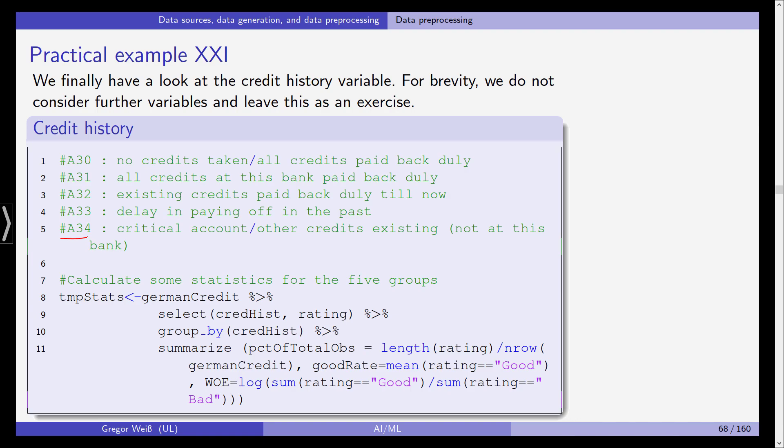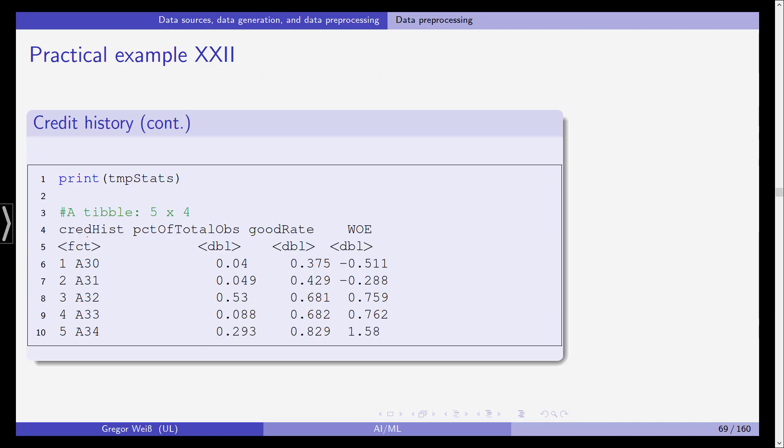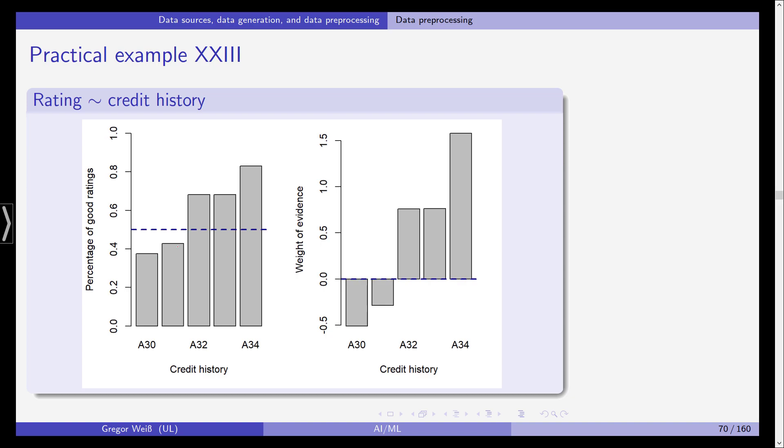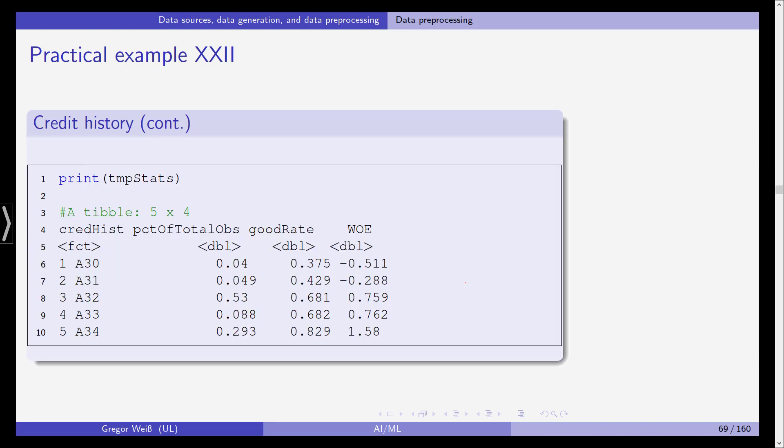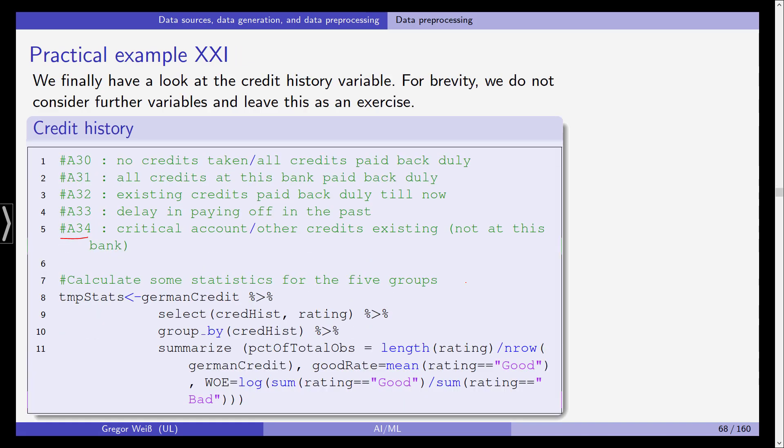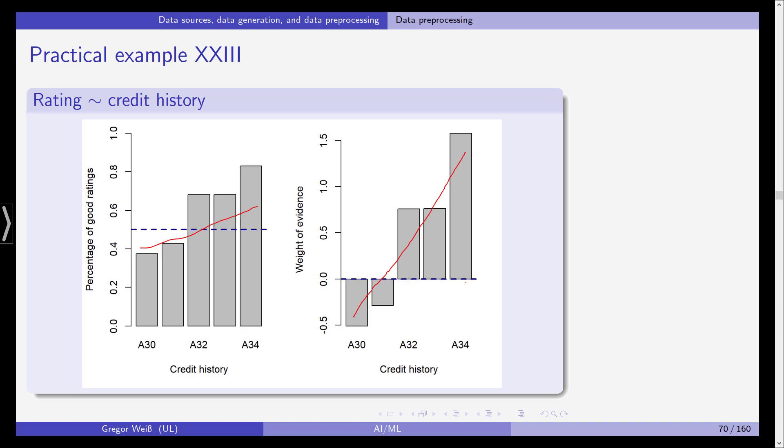Again, let's calculate the percentage of total observations, the mean of the good ratings and the weight of evidence. And this is what comes out of this analysis. You can see here, it starts with 4%, 4%, 50%, 8%, 29%. And for the weight of evidence it's even more extreme as we've seen before. So this is the percentage of good ratings. It's much more extreme and not surprisingly the last status, which is critical account, is highly predictive and has high explanatory power for explaining a bad credit rating.